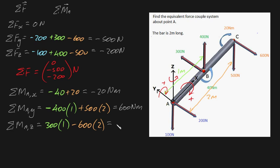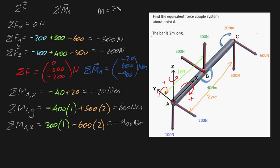What we've essentially shown is that the net moment at point A is equal to a vector: minus 20, 600, minus 900 Newton meters. As a brief aside, you could also use the cross product to find the moments — moment equals r cross F — and I'll be showing how to do this in another video.